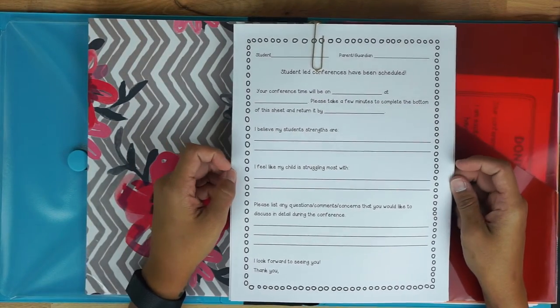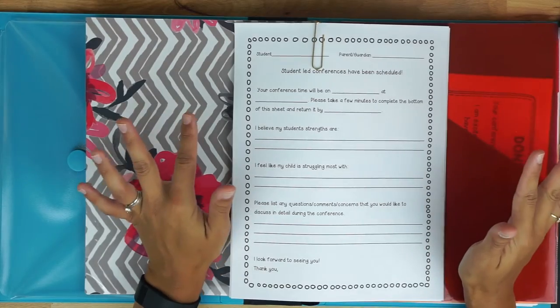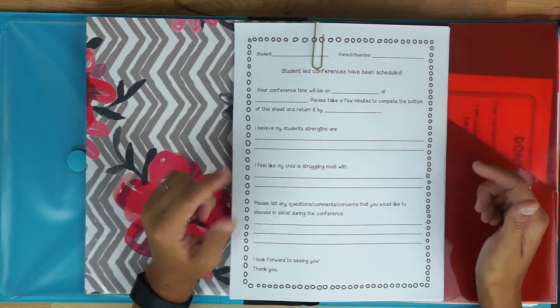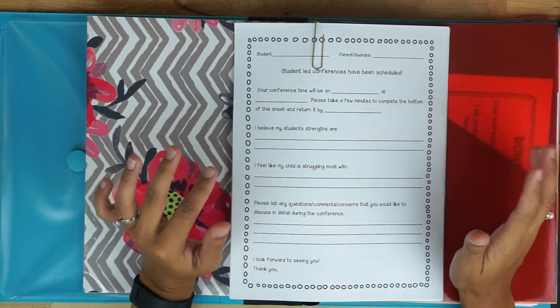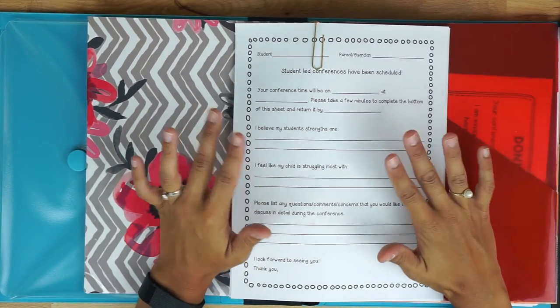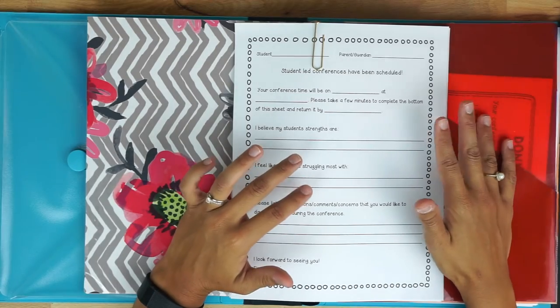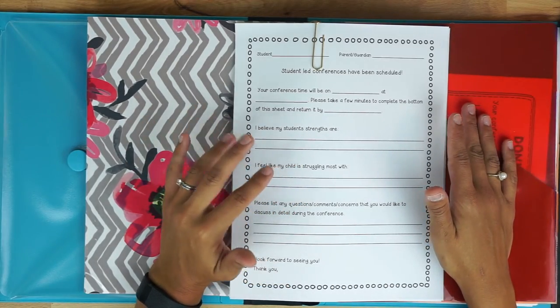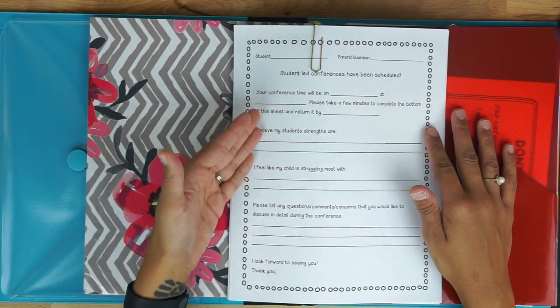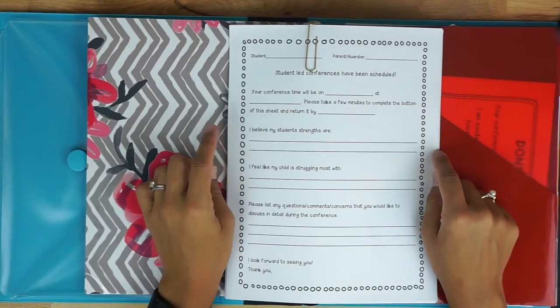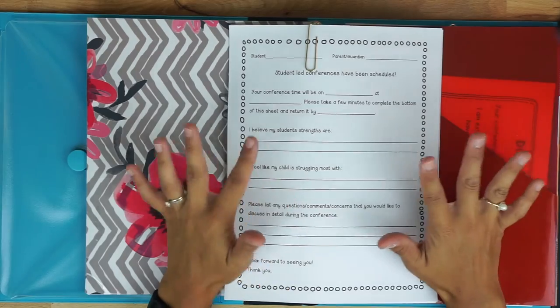So this is what they get home after I have scheduled the conference. They will then receive one of these which is just a quick questionnaire for them and it helps me to be a little bit more prepared and kind of get things together for my conference so that if they say oh hey you know I want to know more about extra activities that I can be doing with my child and reading I can already have that pulled and prepared for them with this sheet.